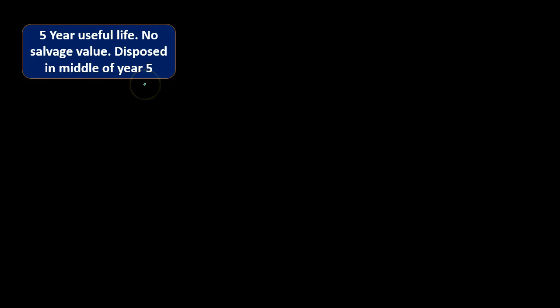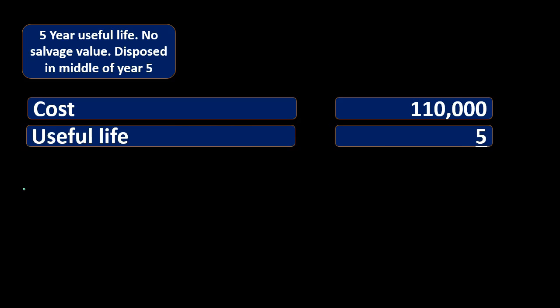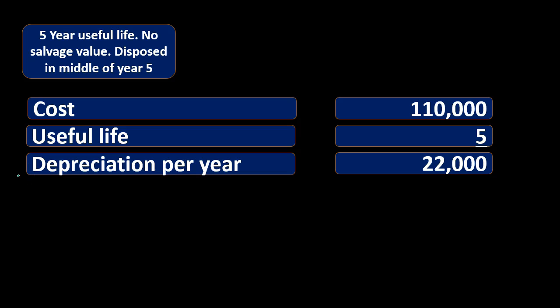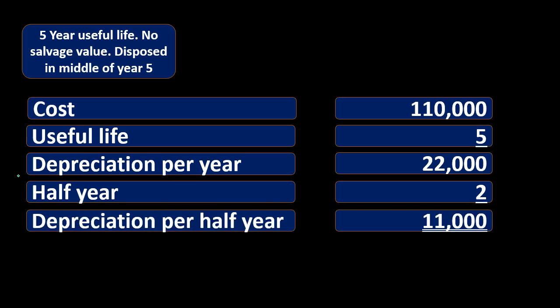In our case, adjusting entries are recorded each year at the end of the year. In the middle of year five we are disposing of the equipment before it's totally depreciated, so we need to account for half a year of depreciation — because the last depreciation entry was at the end of year four. To calculate it: cost of $110,000 divided by the five-year useful life gives $22,000 depreciation per year. Half of that is $11,000, which we need to record.